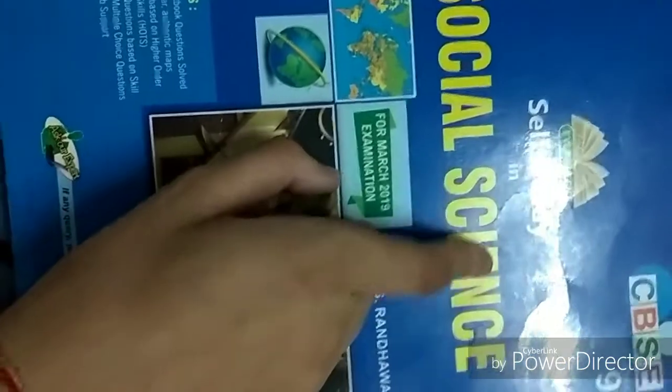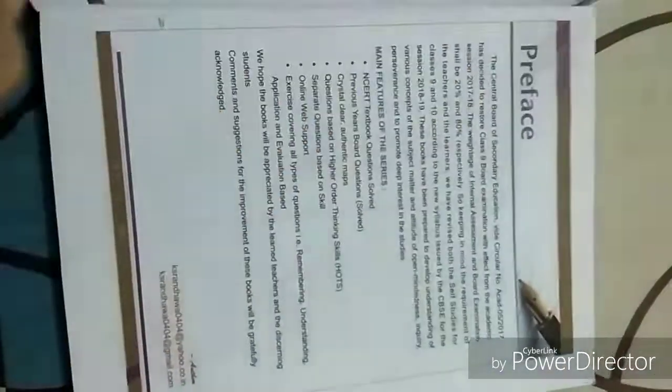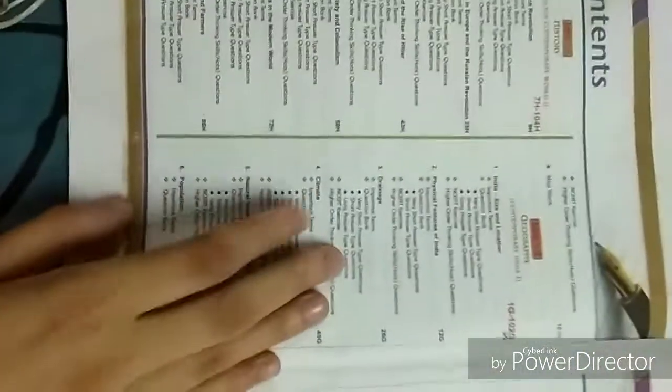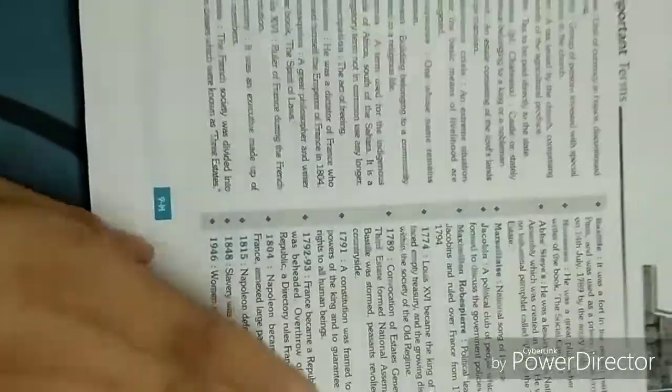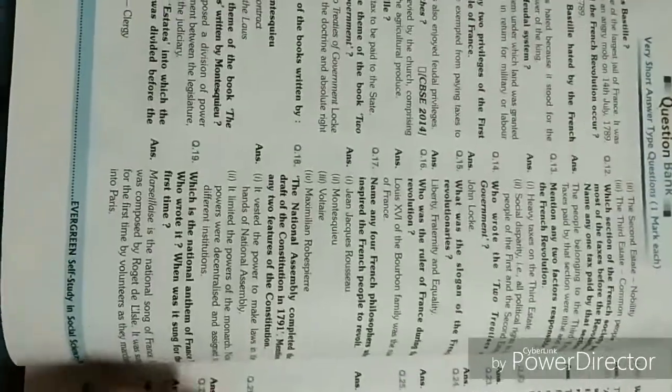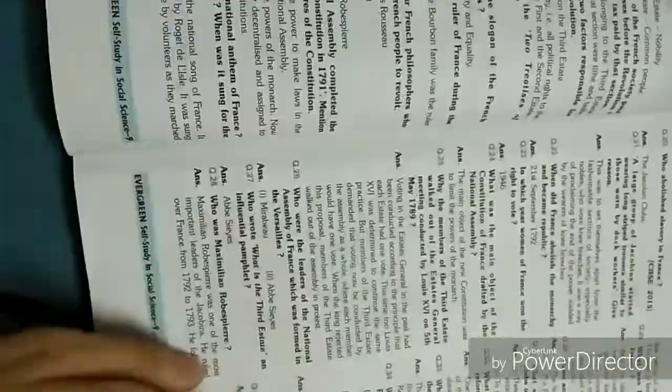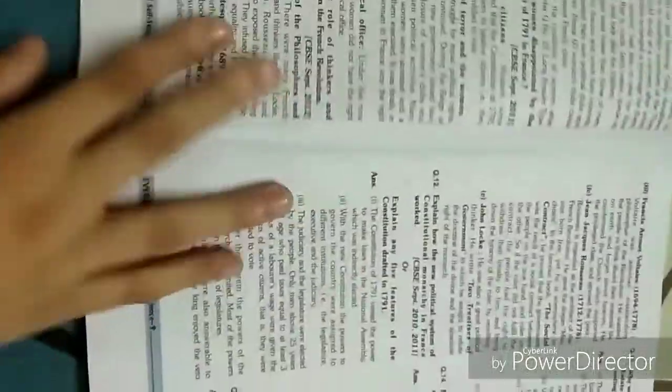For Social Science, I have this Evergreen Self-Study in Social Science and it's just an amazing book. Everything, history, geography, political science, and economics is well explained in this book. Let me show you. The French Revolution, the important terms first for definitions and some important dates are given. Then question bank starts. It's best for question bank. And otherwise I personally use NCERT first and then for questions I use this book. Short questions, and these were one mark questions, and after that these are three marks questions, and after that four marks questions are there. And it's similar for history, geography, economics, and civics.